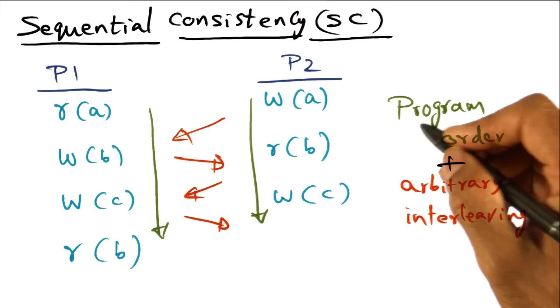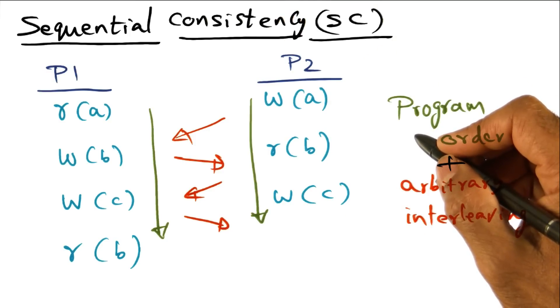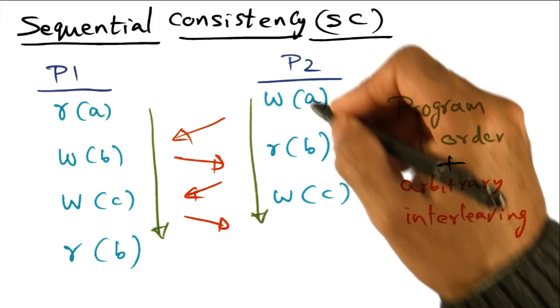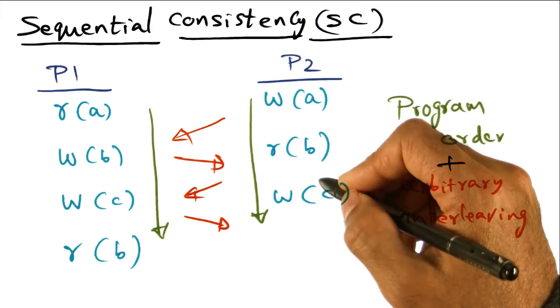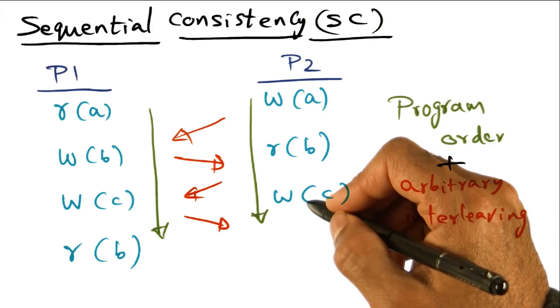In other words, the sequential consistency model builds on the atomicity for individual read-write operations and says that individual read-write operations are atomic on any given processor and the program order has to be preserved.